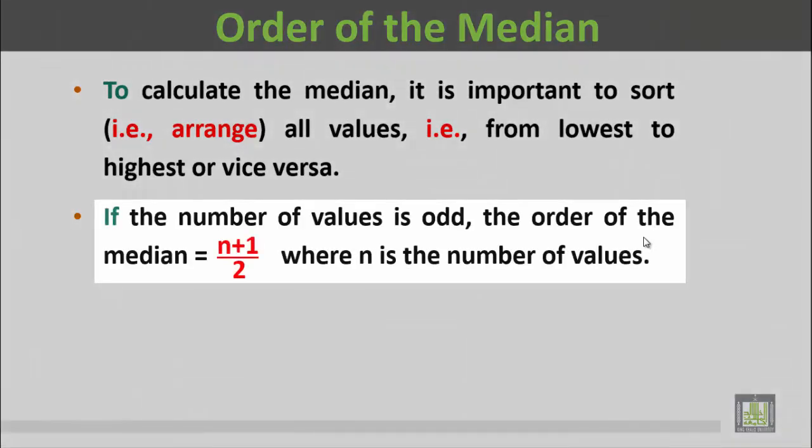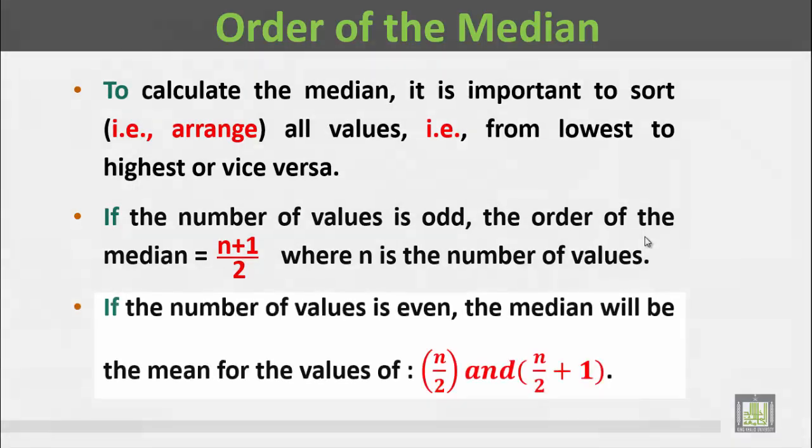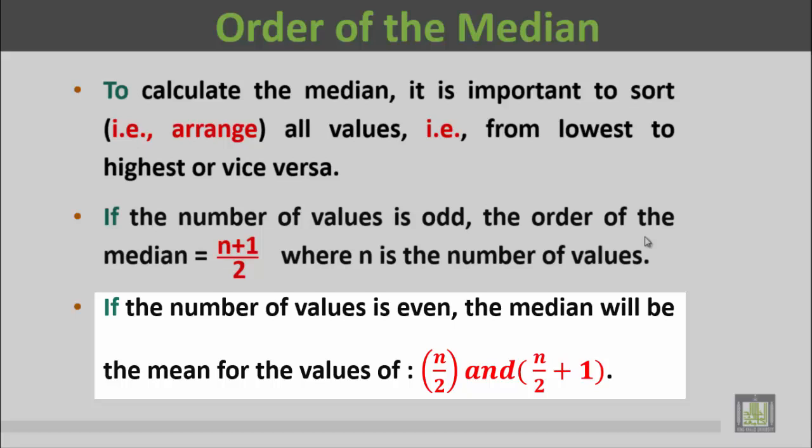If the number of values is odd, the order of the median will be (n+1) divided by 2, where n is the number of values. If the number of values is even, the median will be the mean of the values of n/2 and (n/2)+1.